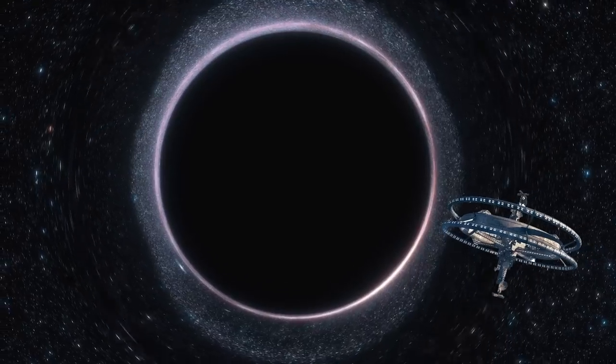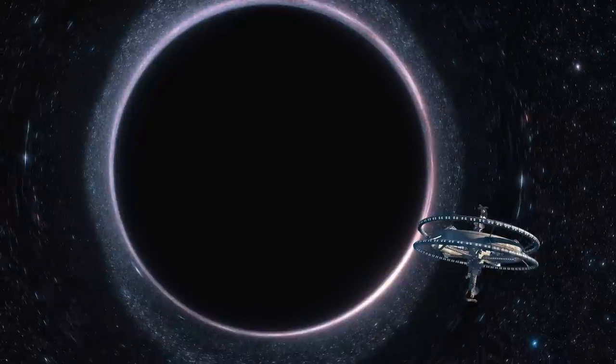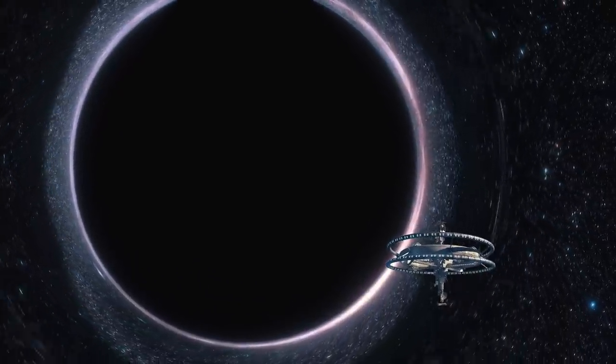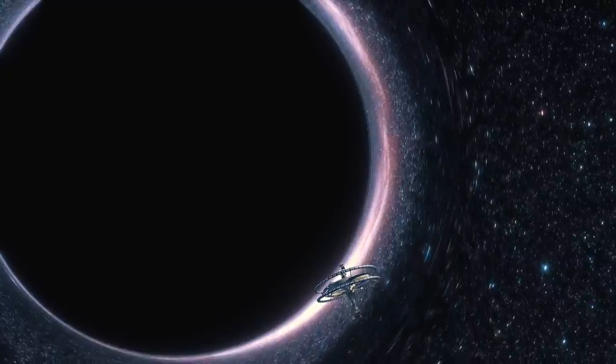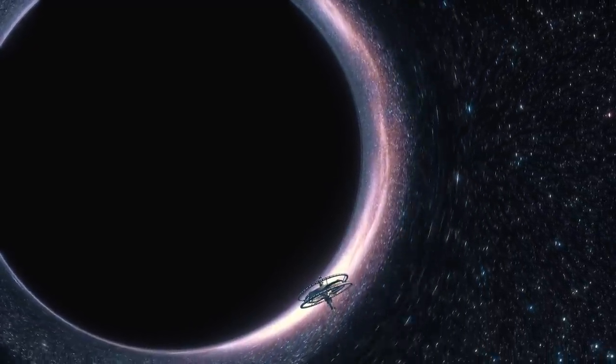Near a black hole, the slowing of time is extreme. From the viewpoint of an observer outside the black hole, time stops. For example, an object falling through the hole would appear frozen in time at the edge of the hole.